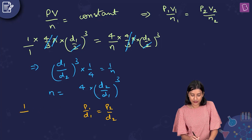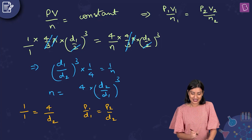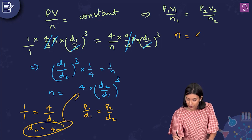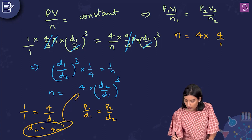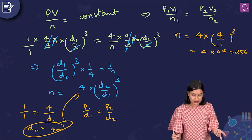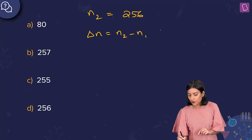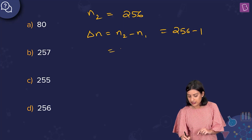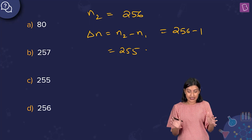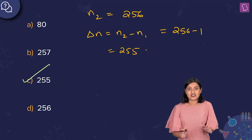Substituting d2 = 4 meters and d1 = 1 meter into n = 4 × (d2/d1)³ = 4 × (4/1)³ = 4 × 64 = 256. So n2 = 256 moles. The additional moles needed: Δn = n2 − n1 = 256 − 1 = 255 moles. Option C, 255, is the right answer.